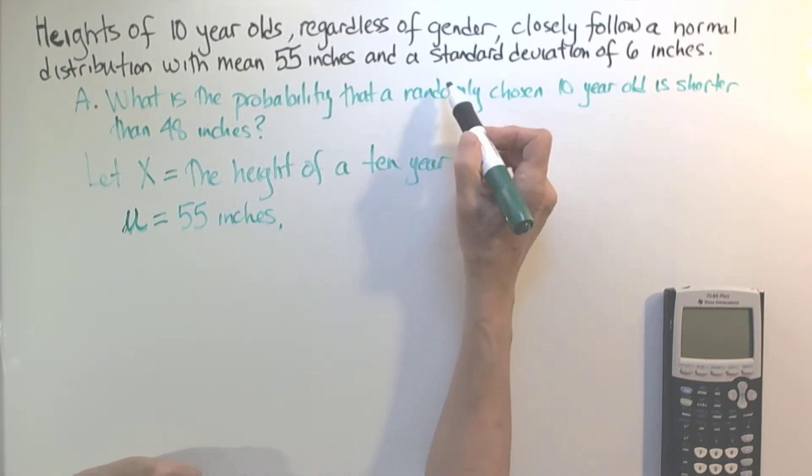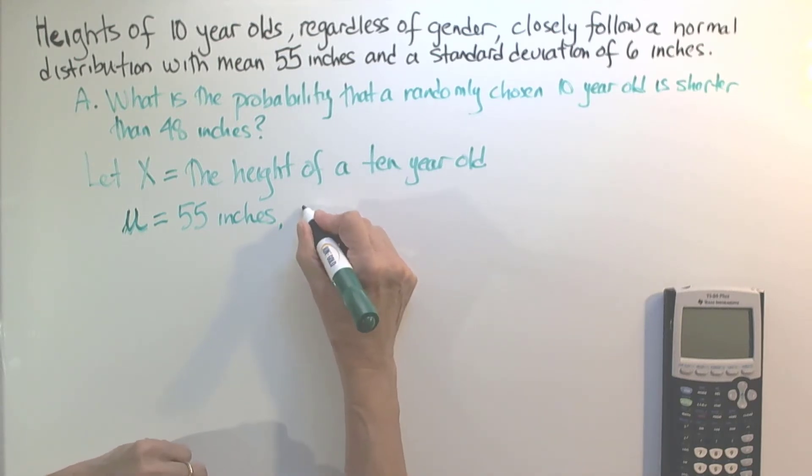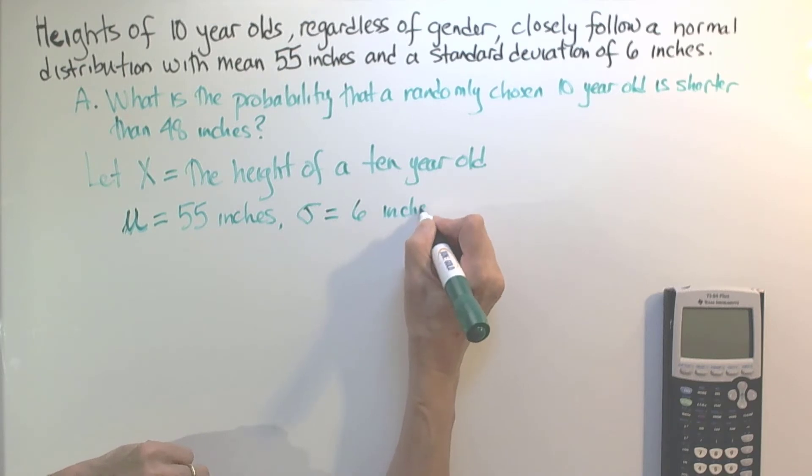And we're also given the standard deviation of 6 inches. So we'll use notation there to say that σ is 6 inches.